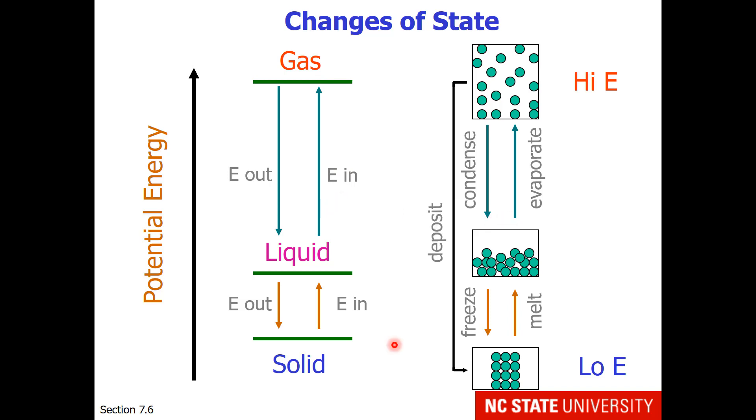Then there are some unusual circumstances where one can go directly from gas to solid. That involves removal of energy, and this transition is called deposition. Likewise, one can sometimes go from solid directly to gas, and this process is called sublimation.